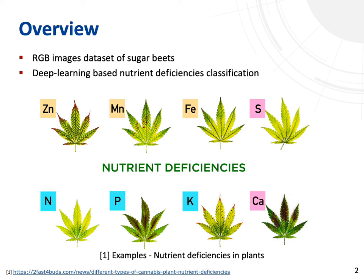An early, non-invasive, and on-site detection of nutrient deficiencies is crucial to enable appropriate nutrient control and to increase yield potential. However, previous technologies for these tasks are time-consuming or do not offer satisfactory accuracy. For this purpose, we introduced a high-quality RGB images dataset of sugar beets and proposed to develop a deep learning-based method to diagnose their nutrient deficiencies.